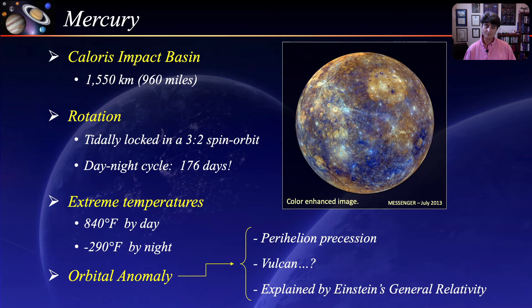For the Trekkies out there, this is not Spock's home world. In Star Trek, Vulcan is a fictional exoplanet of the star 40 Eridani A, which is about 16 light years from Earth.